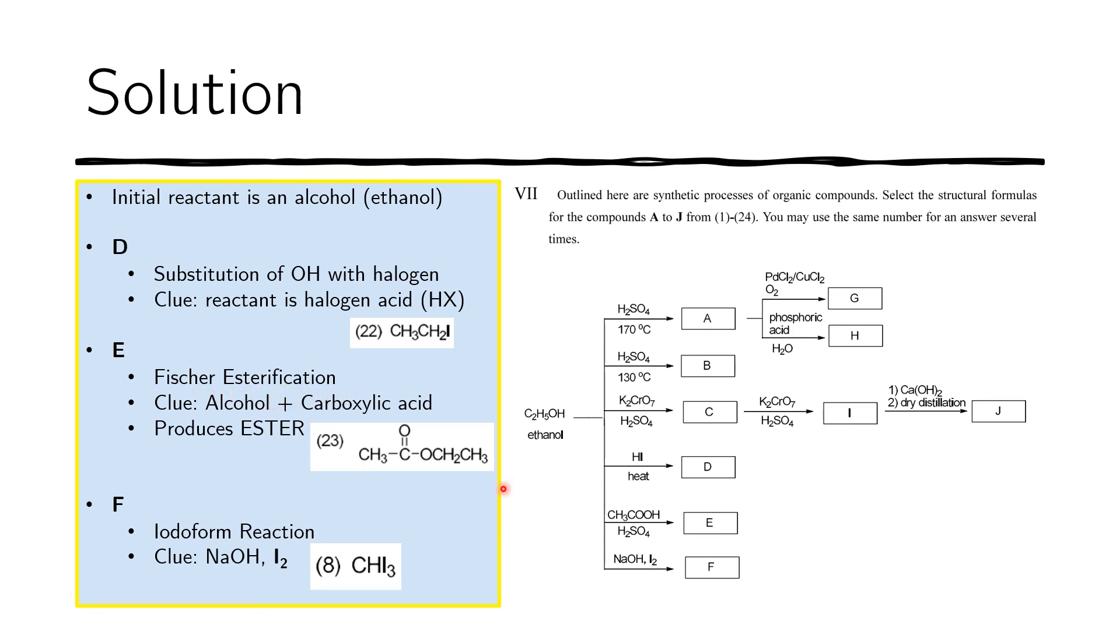And lastly, we have the NaOH and iodine. This is a famous reaction, it's called the iodoform reaction. You just have to remember that the product of this is actually this bit here. The only clue you have is the NaOH and the I2. So this is just something you have to remember.